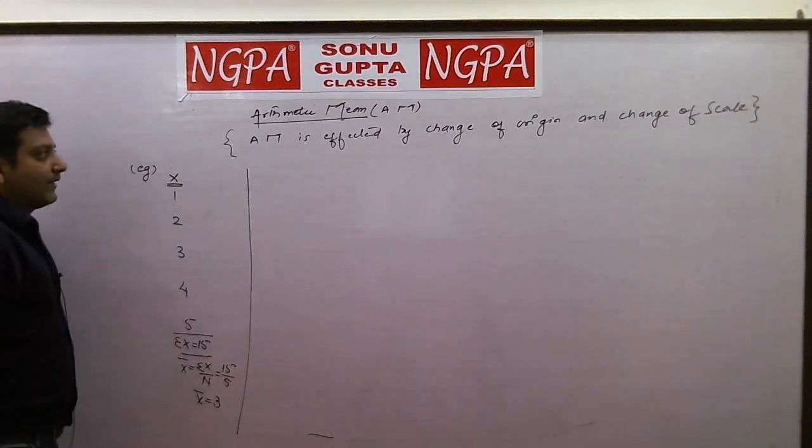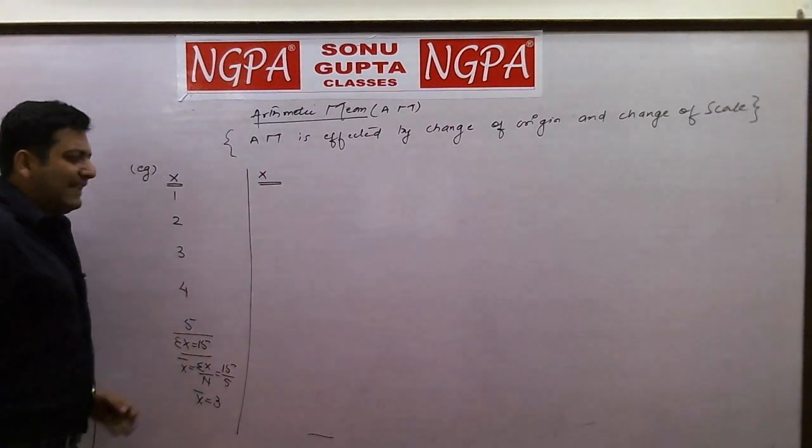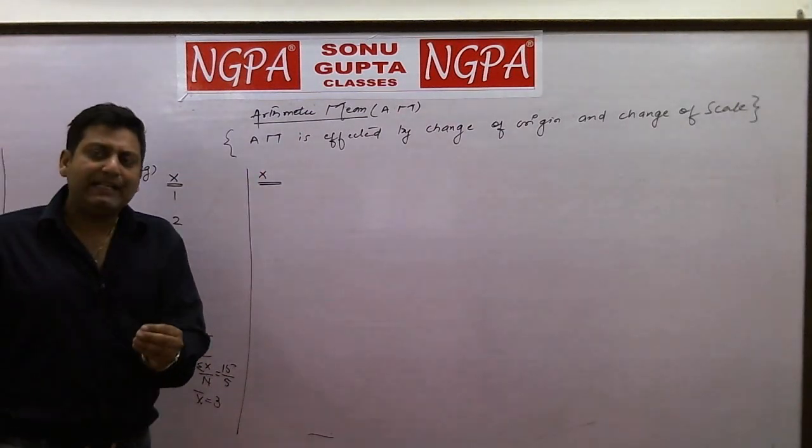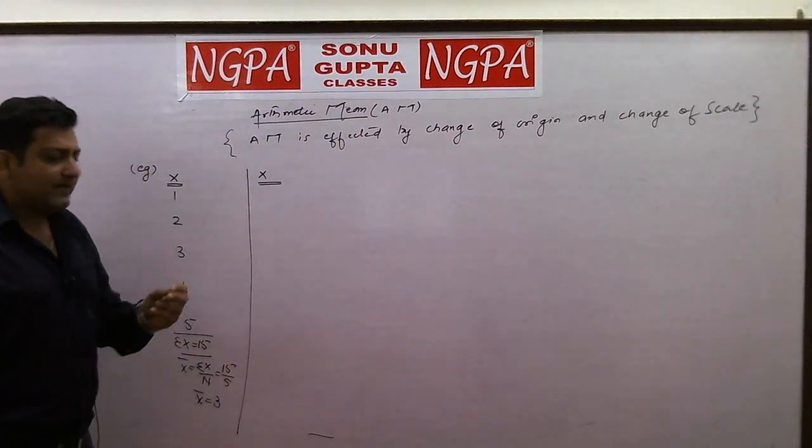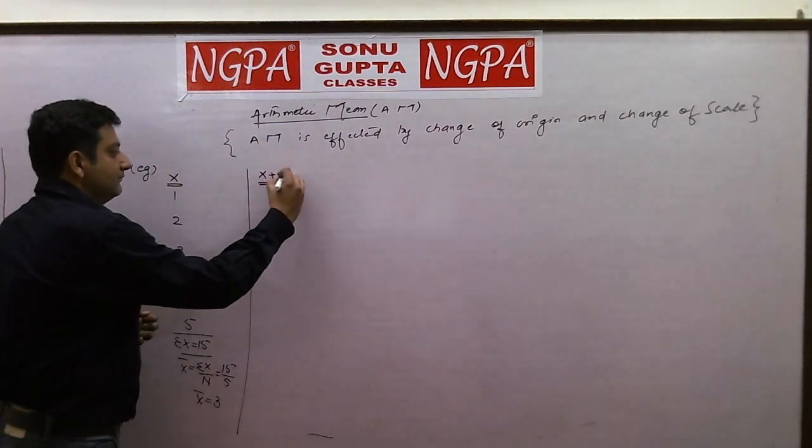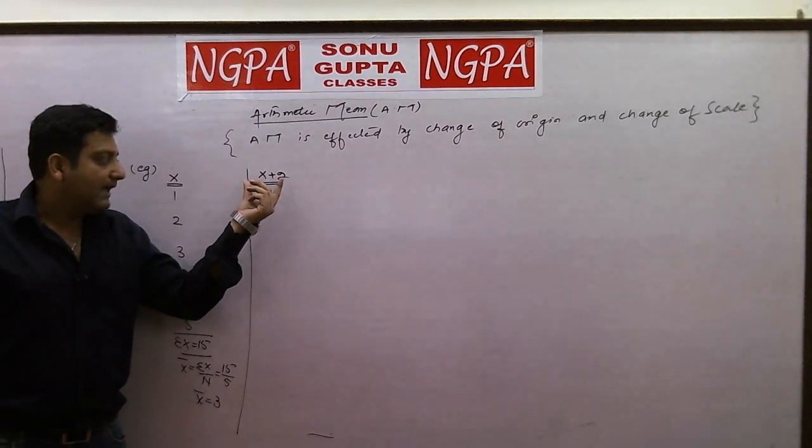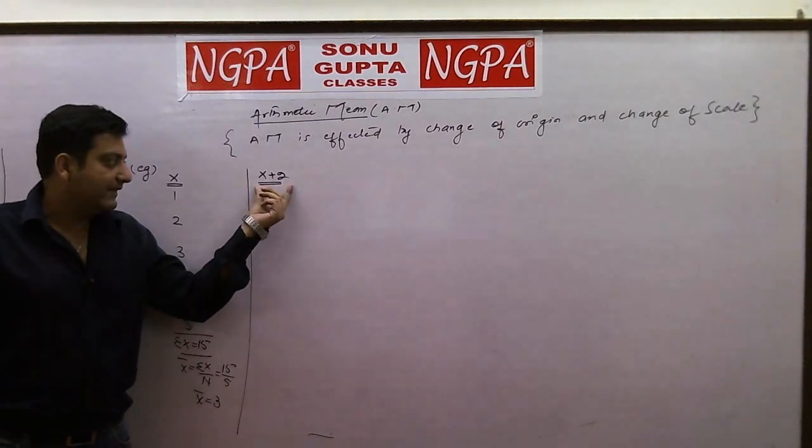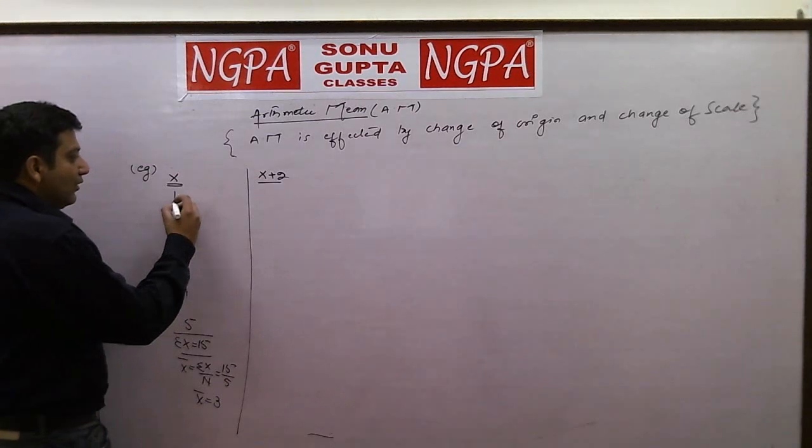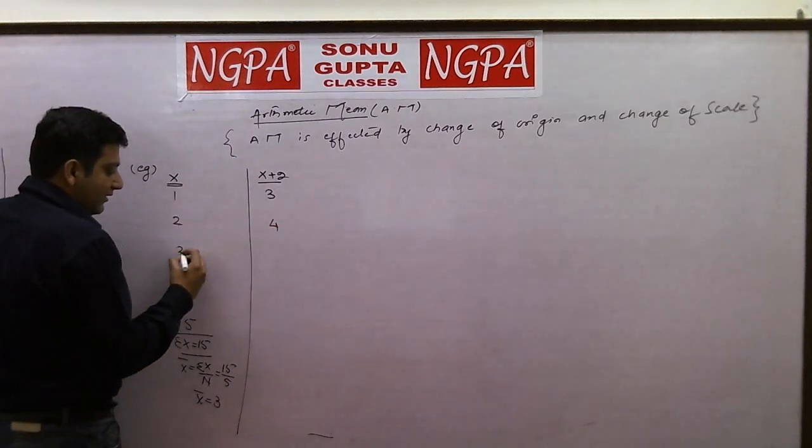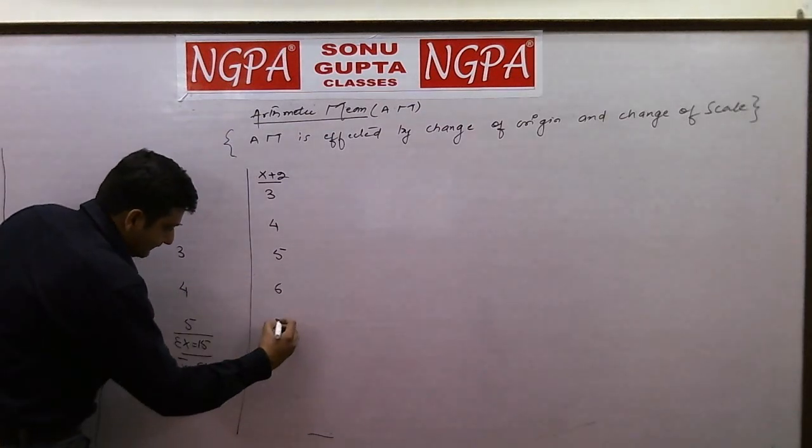Now let's see this property with the help of an example. Say I am taking any constant value, I'm considering a value 2, and 2 is added with every value of x. Let's see what happens if we add 2 to every value of x. 1 plus 2 is 3, 2 plus 2 is 4, 3 plus 2 is 5, 4 plus 2 is 6, and 5 plus 2 is 7.